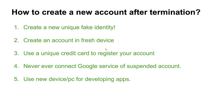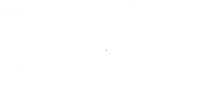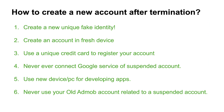Number five: use a new device or PC for developing apps. This is recommended — when you develop or code apps, use a new device, not the old one where your account was suspended. Number six: never use your old mobile account related to the suspended account. Overall, if you want to create a new account and avoid termination, prepare everything new: a new unique identity, a fresh device, and a new credit card. Basically, you need to act as a completely new person, unrelated to the previous one.